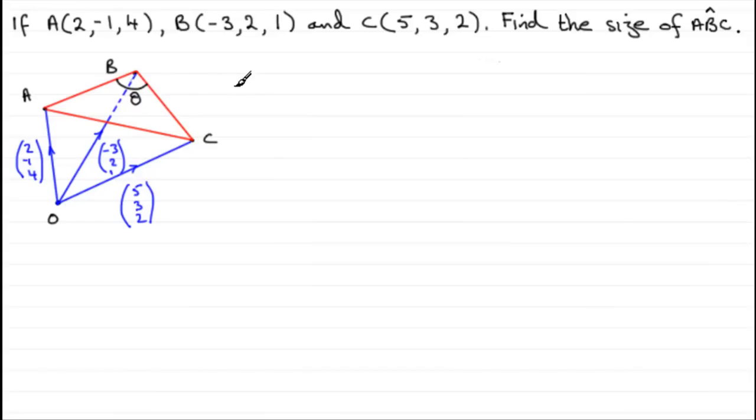Remember the formula: cos θ equals essentially A dot B over the magnitude of A times the magnitude of B. A and B though are not these particular vectors out here. We've got to be careful. We've got to take our vectors A and B as vectors that come away from this angle.